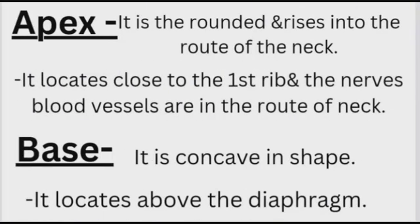The first part is the apex. It is rounded in shape and rises into the root of the neck. It is located close to the first rib, and major blood vessels are present in the root of the neck in this region.